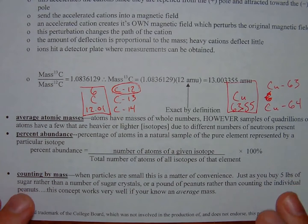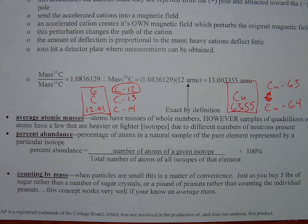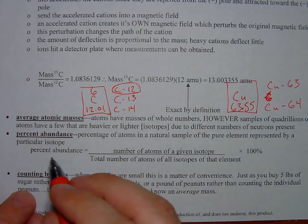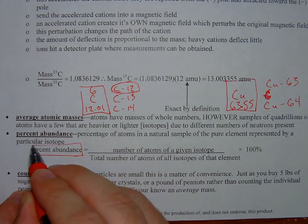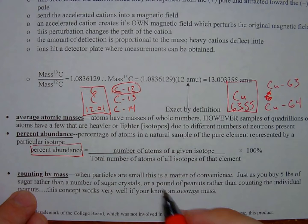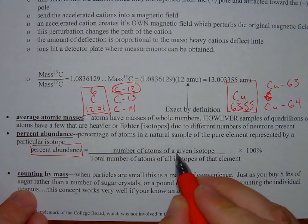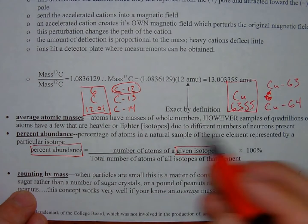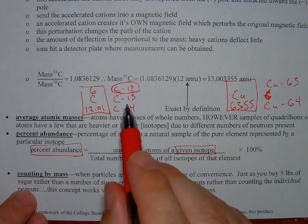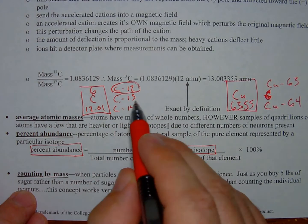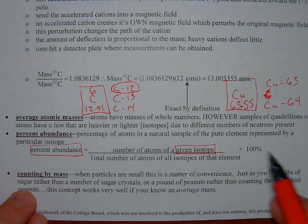Percent abundance is the percentage of atoms in a natural sample, meaning it actually represents the natural world. The percentage of atoms in a natural sample of the pure element represented by a particular isotope. If we want to calculate the percent abundance, we're going to take the number of atoms of a given isotope - this would be like carbon-12. If we're only going to pick out carbon-12, or carbon-13, or carbon-14,